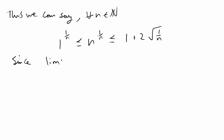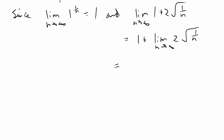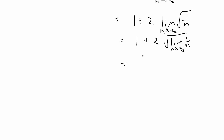The limit of 1 to the 1 over n as n goes to infinity: the exponent 1 over n goes to 0, so 1 to the 0 is 1. For the limit of 1 plus 2 times the square root of 1 over n as n goes to infinity, that equals 1 plus the limit of 2 times the square root of 1 over n, which equals 1 plus 2 times the square root of the limit of 1 over n. Since the limit of 1 over n is 0, we get the square root of 0 times 2 plus 1, which equals 1.